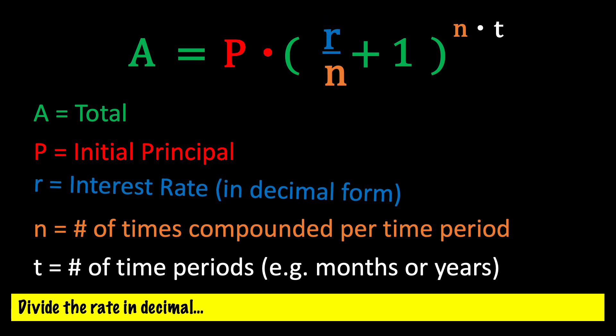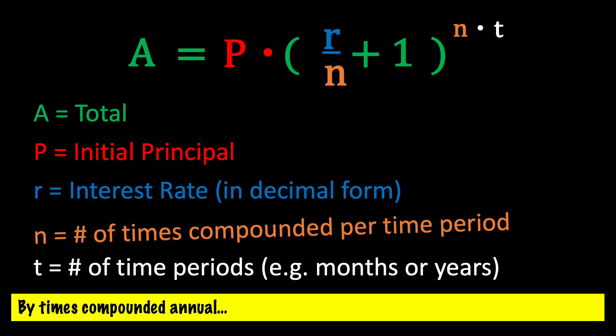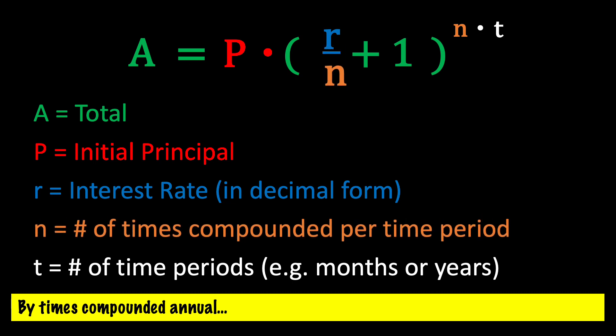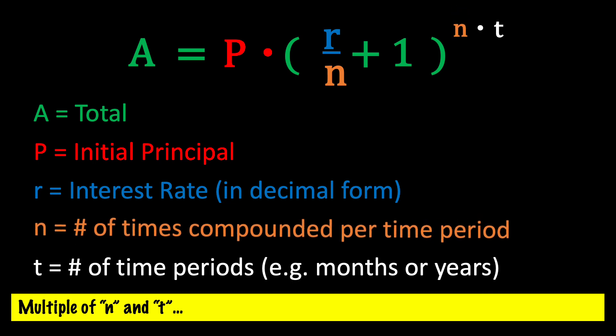Divide the rate in decimal, by times compounded annual. Add a one and raise by the multiple of n and t.